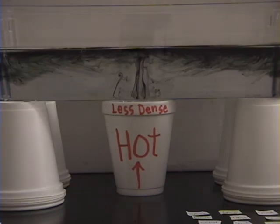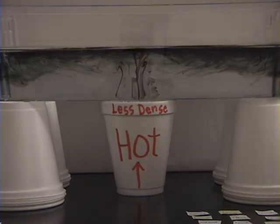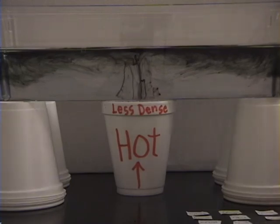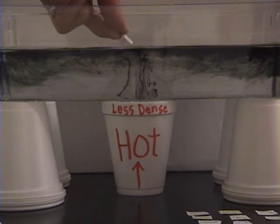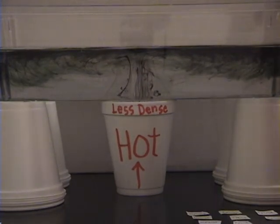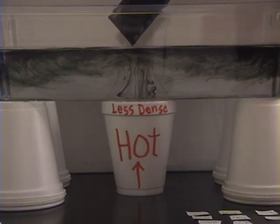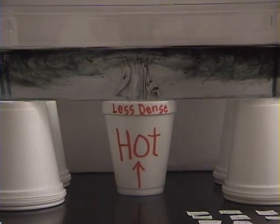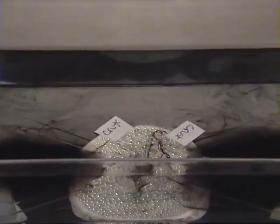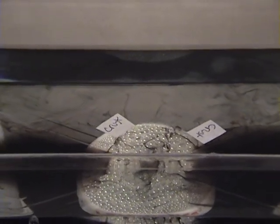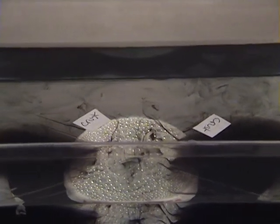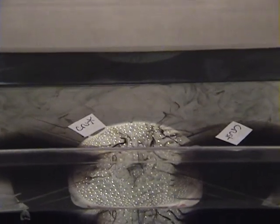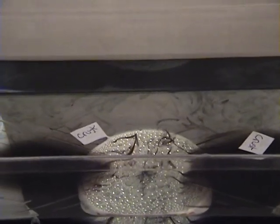Now I'm going to place two pieces of paper just directly above the up current and we'll see what happens to those pieces of paper. We can see that they're actually moving in opposite directions from one another due to the upwelling current caused by the convection.